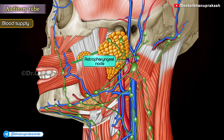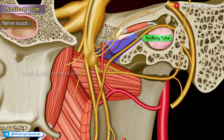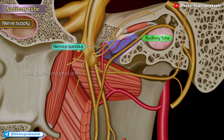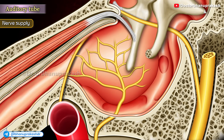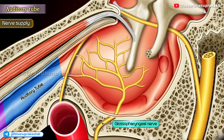Lymphatics drain into the retropharyngeal nodes. Nerve supply: The cartilaginous part is supplied by the nervus spinosus, or meningeal branch of the mandibular nerve. The bony part is supplied by the tympanic plexus formed by the glossopharyngeal nerve.